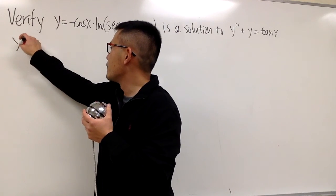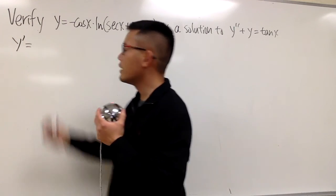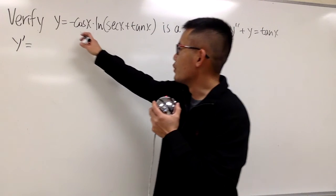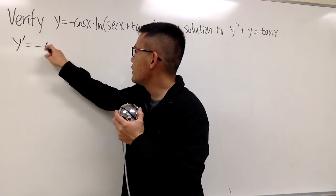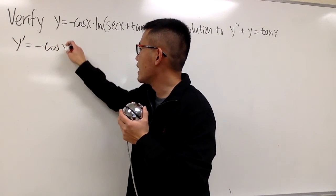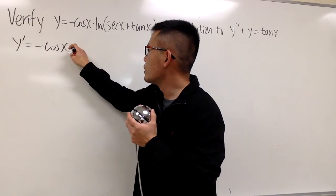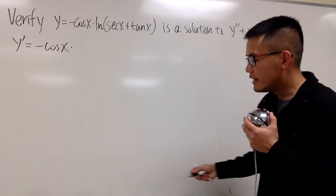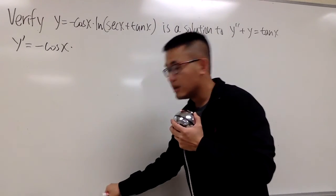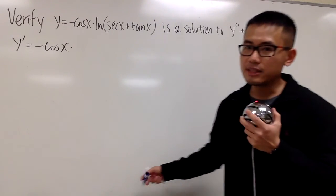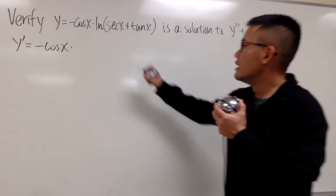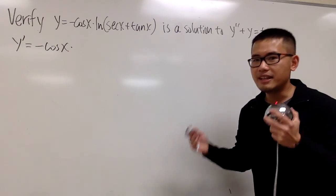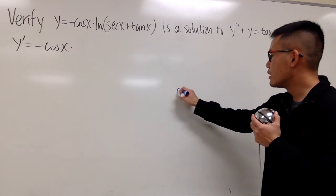Here we have y' for the first derivative. The first thing I'll use for the product rule is we'll keep the first function, negative cosine x, and multiply by the derivative of the second function. The derivative of ln(sec x + tan x) is just secant x — but let me show you all the steps.